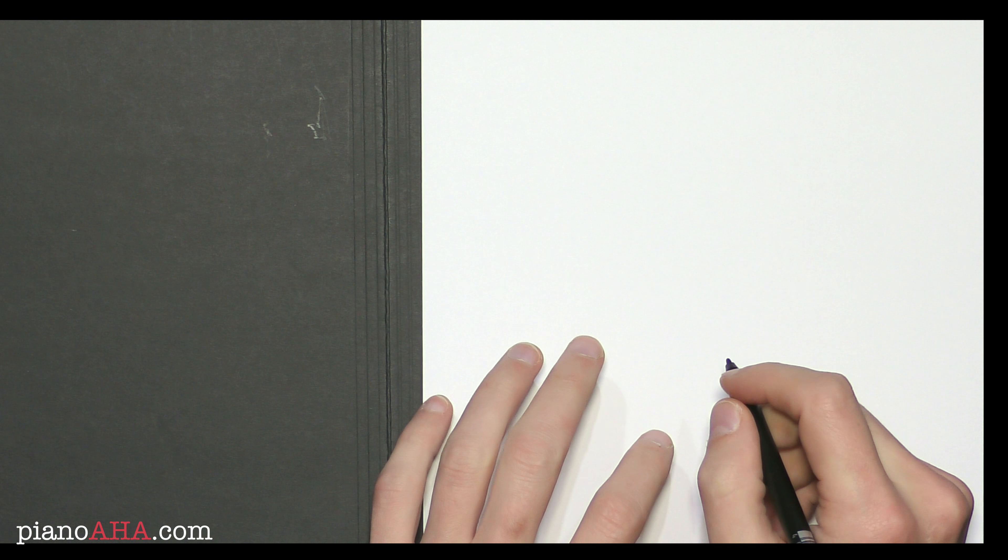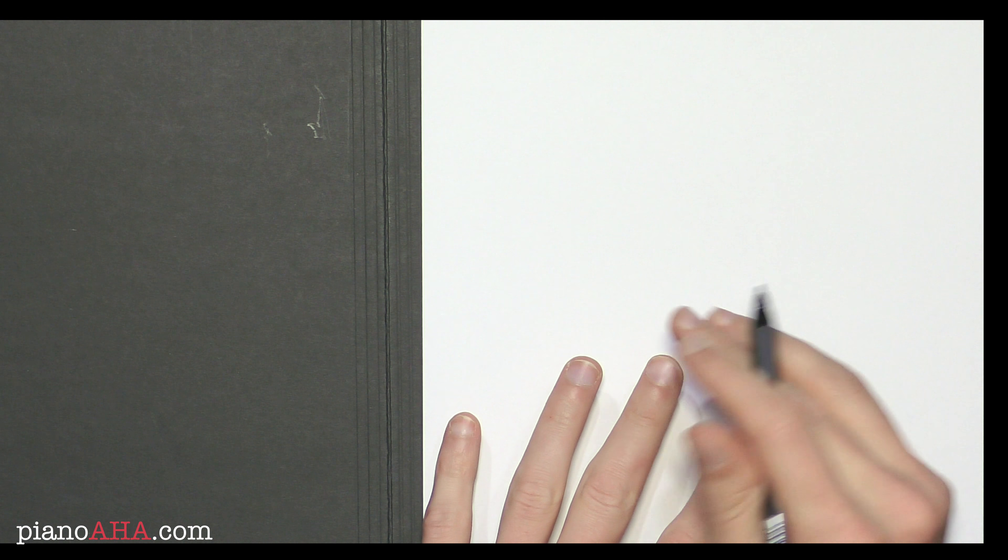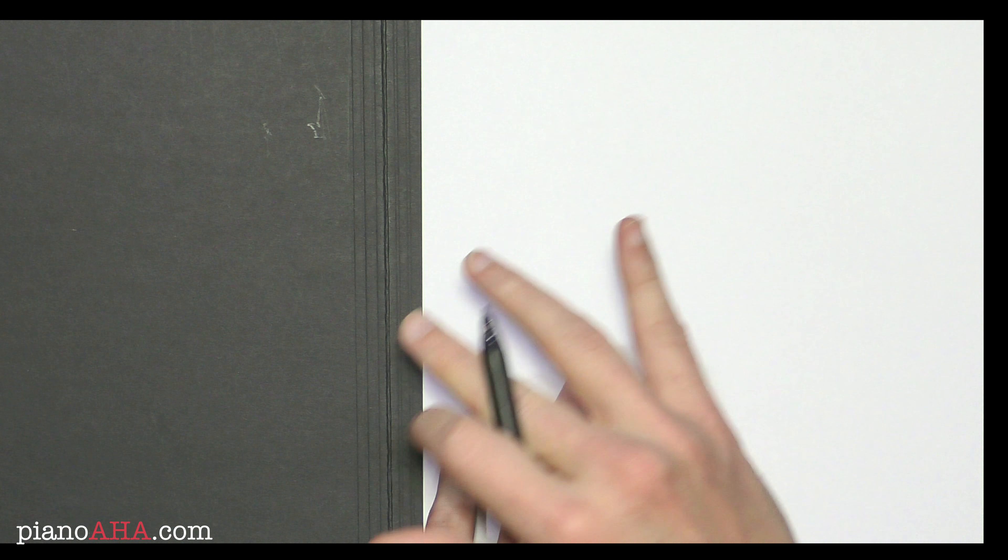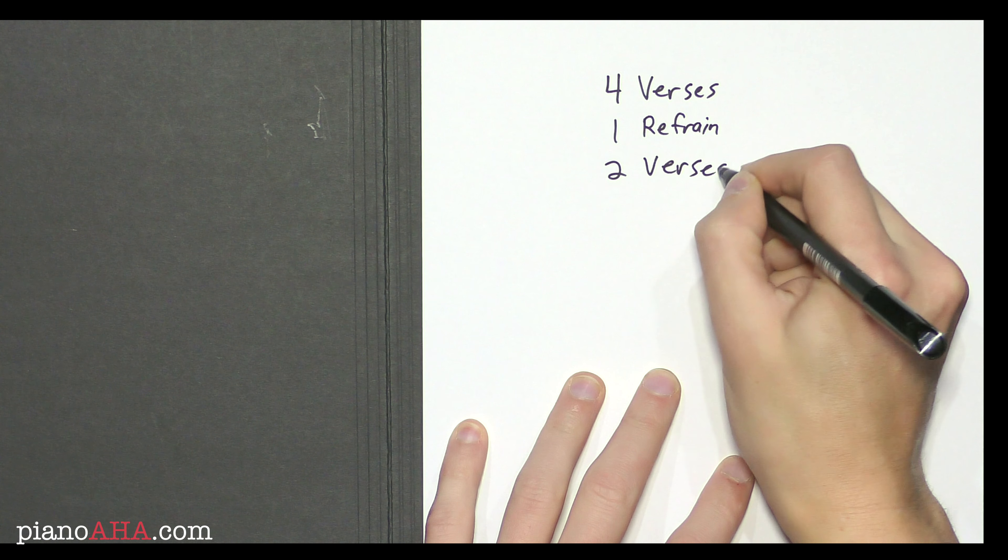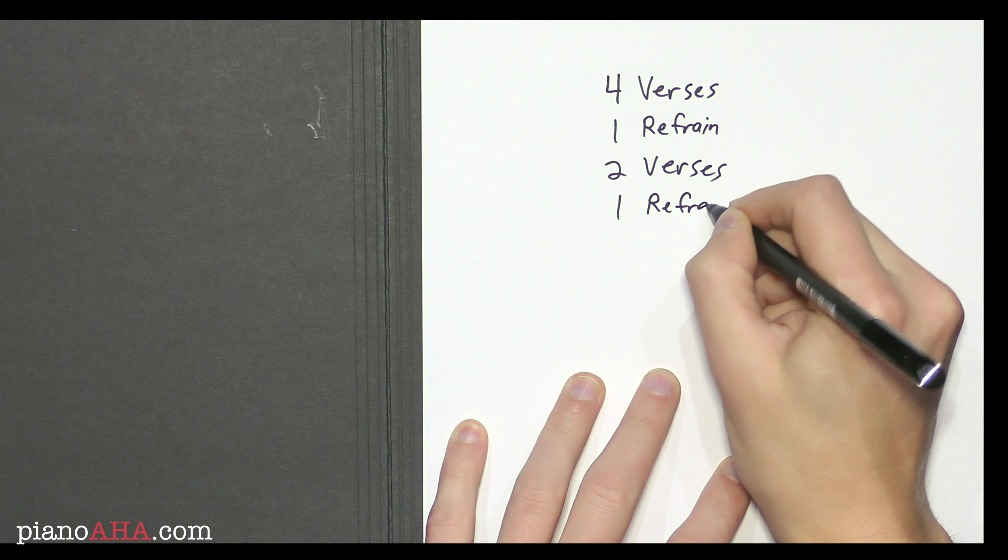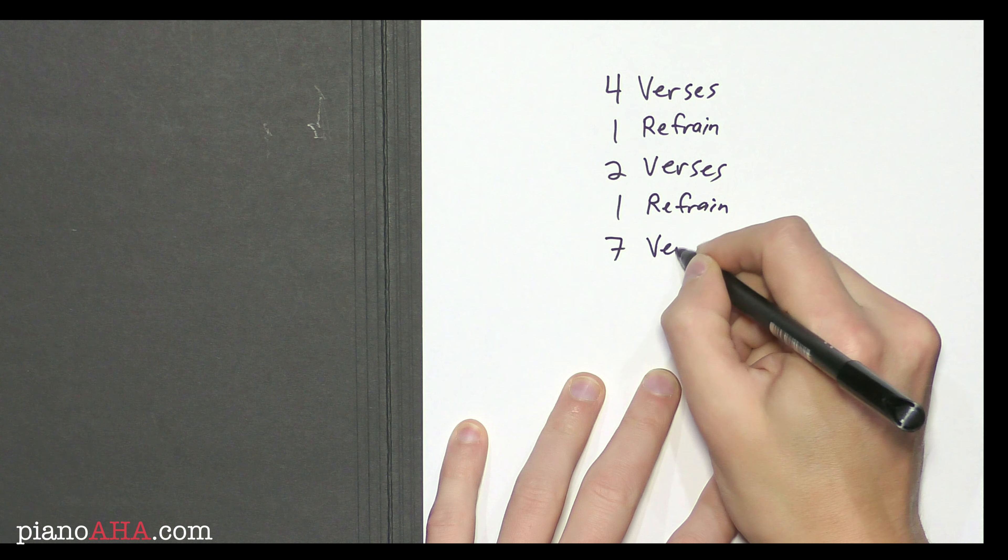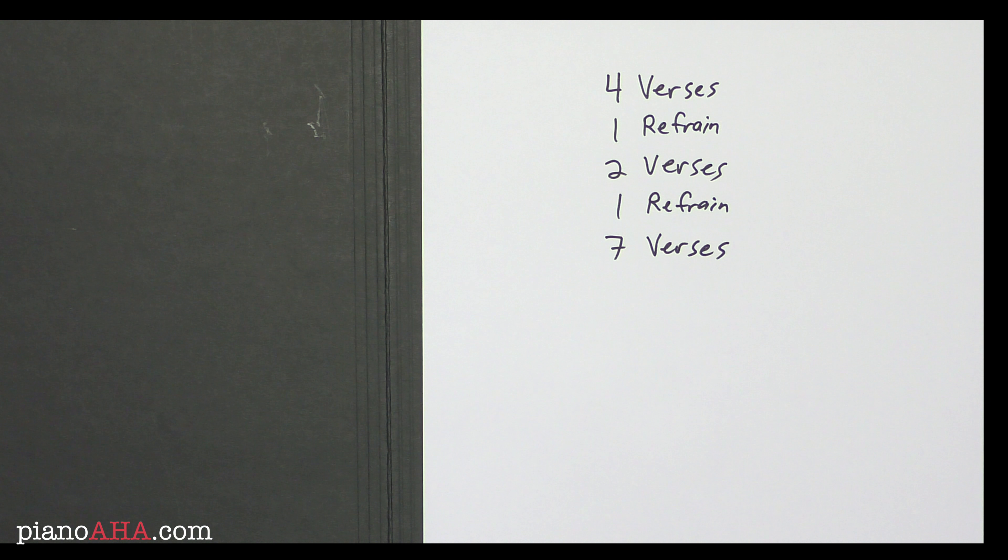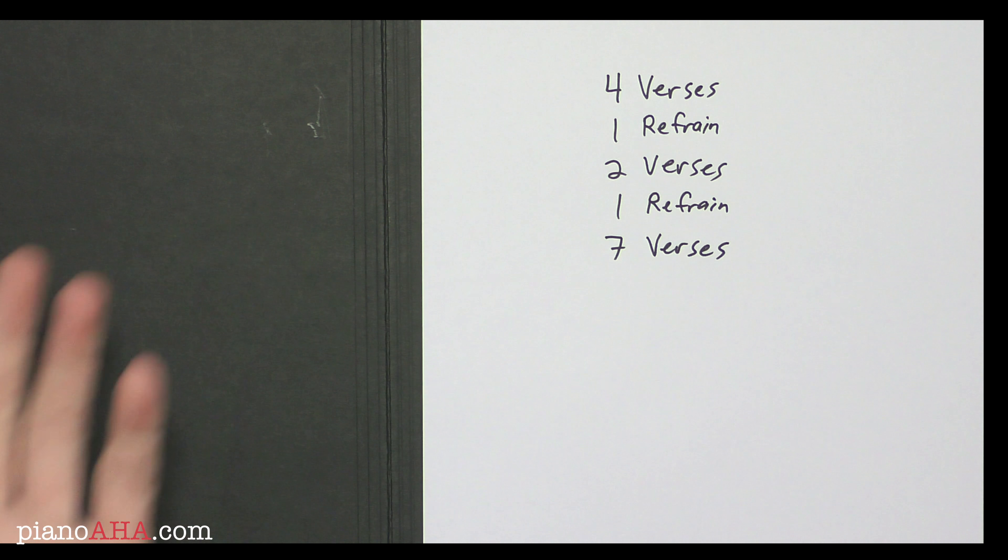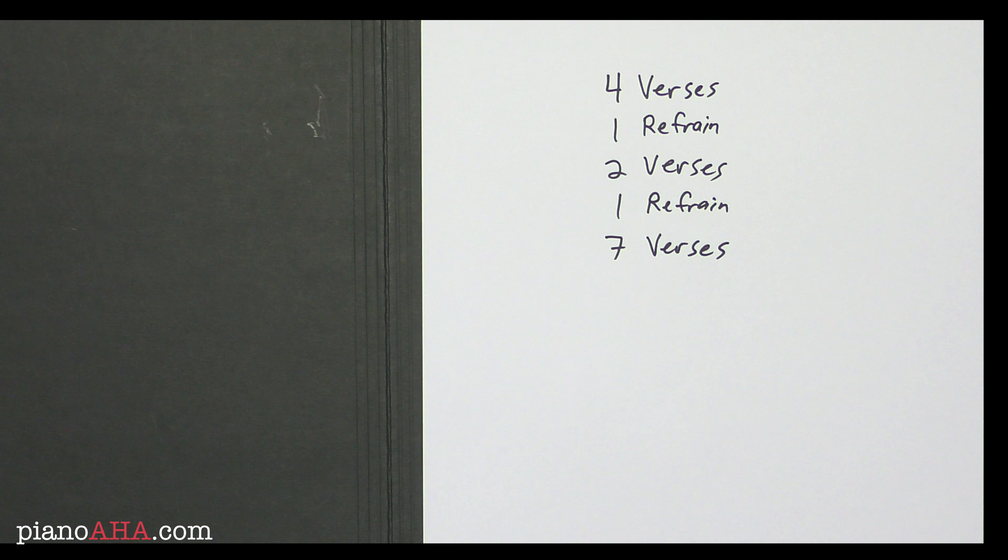So let's talk about the overall structure of Hotel California. If you're just wanting to know where you play which chords, you can remember it this way. We have four verses, one refrain, two verses, one refrain, and seven verses. So if you don't need to know where there's singing or where there's a guitar being played, that's enough information for you. Just remember it like a phone number: 4-1-2-1-7. And you've got everything you need to know.